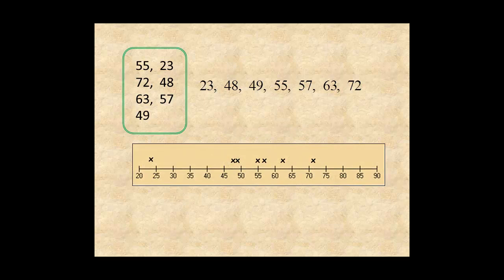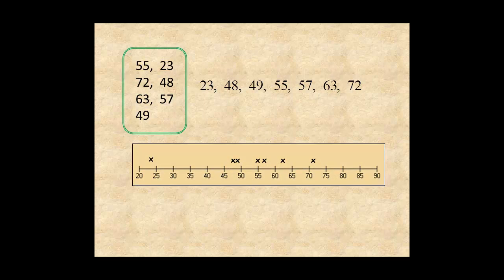A graph is much better. It's pretty easy to see that 23 is probably an outlier.